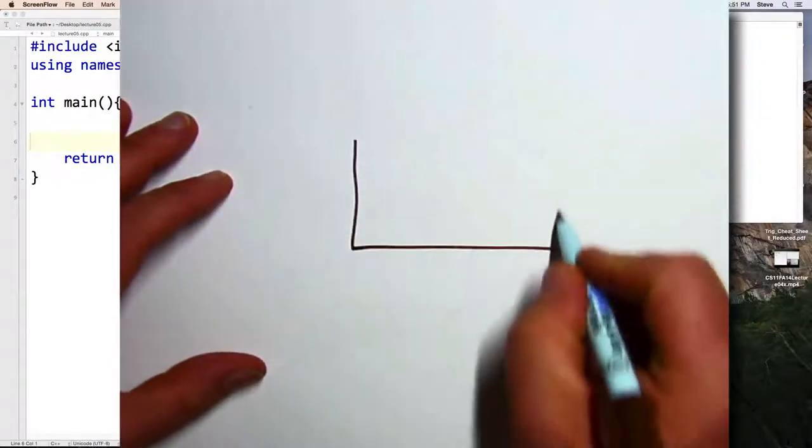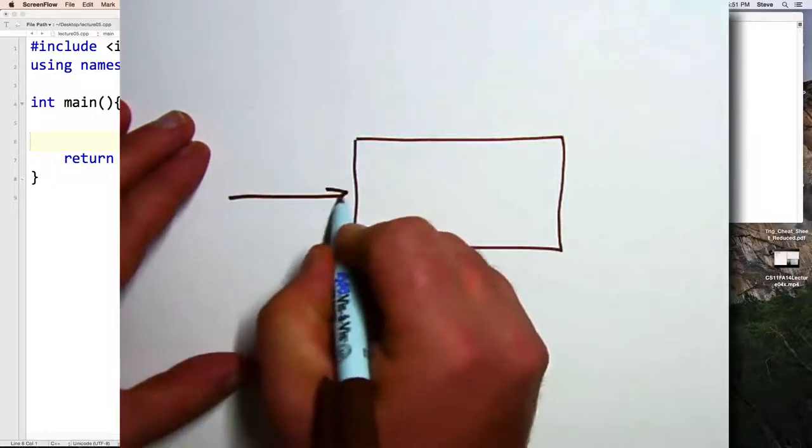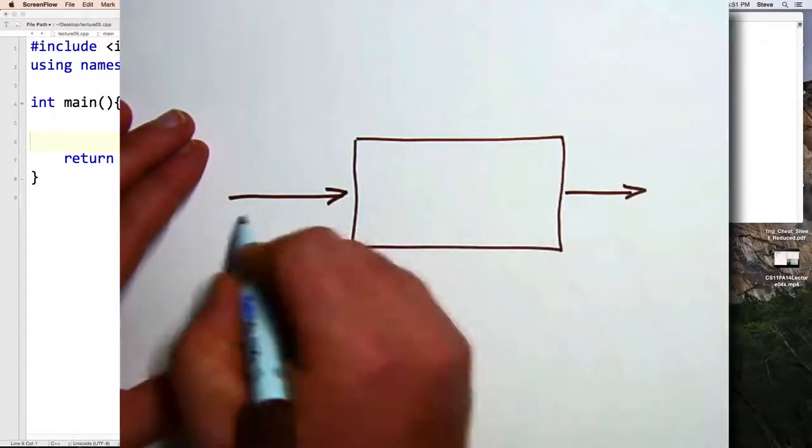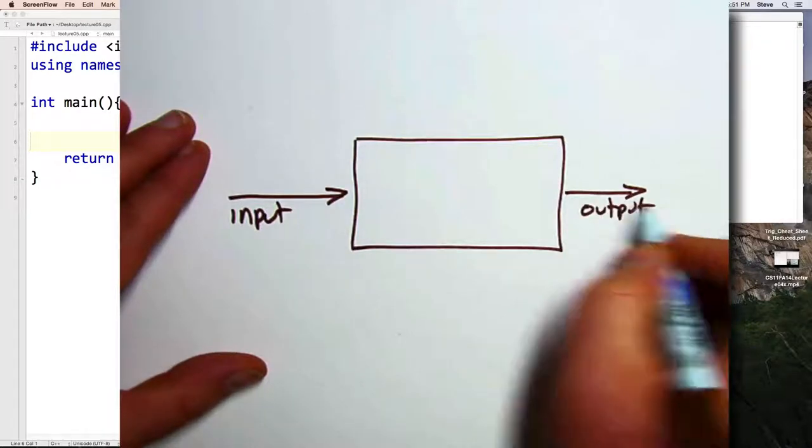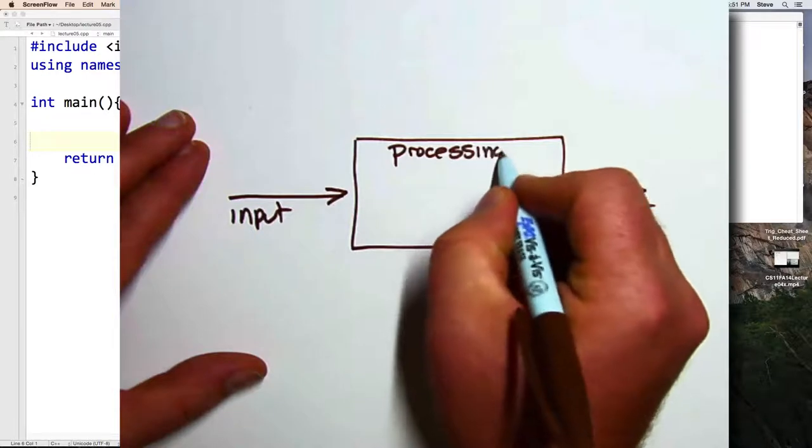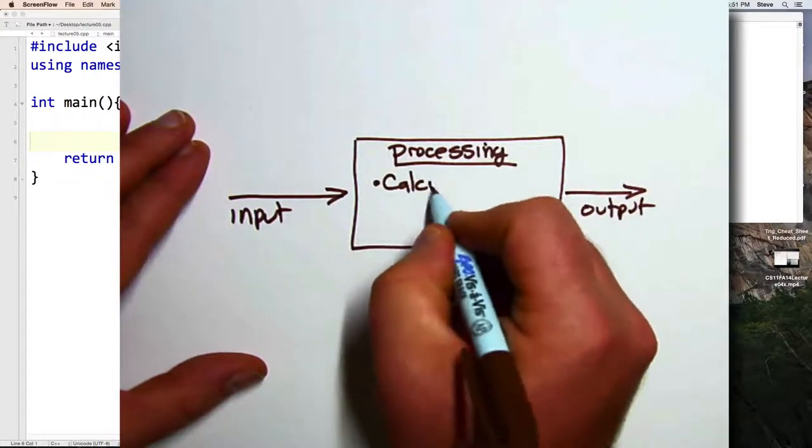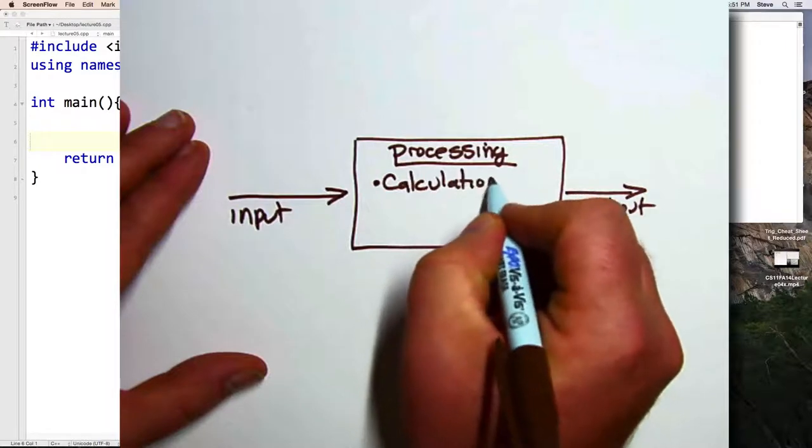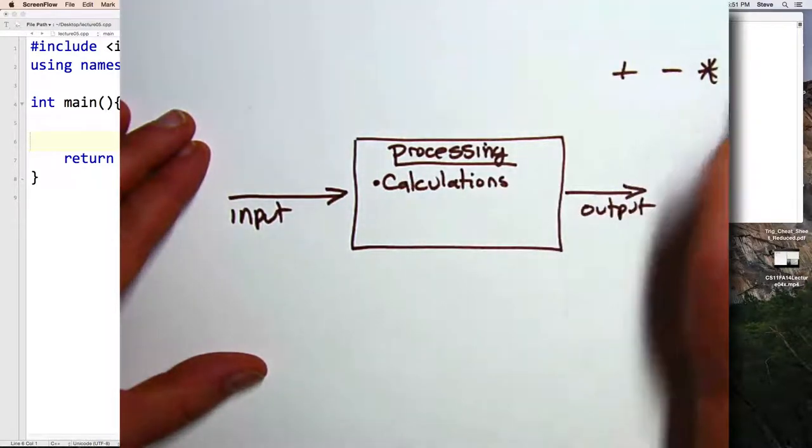Previously, we've seen that a computer program is made up of several pieces, including input, output, and processing of information or data. One type of processing that we've done previously is calculations. We've done arithmetic operations, addition, subtraction, multiplication, division.